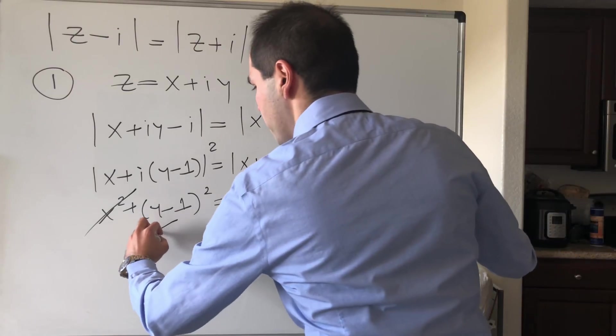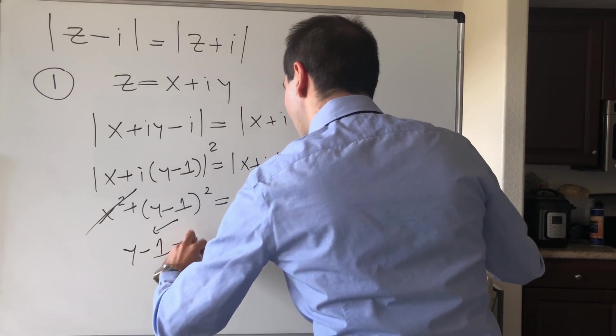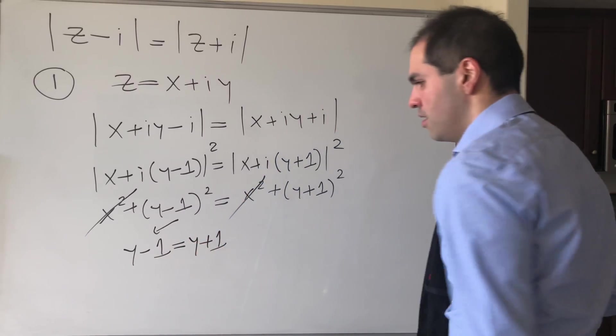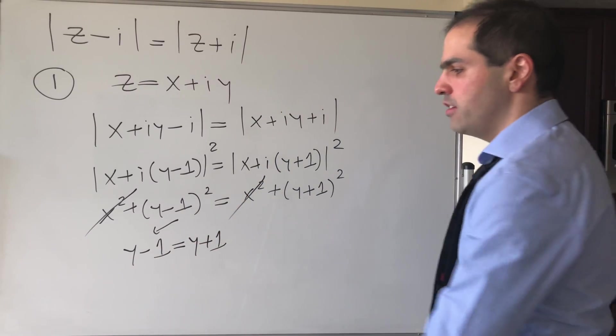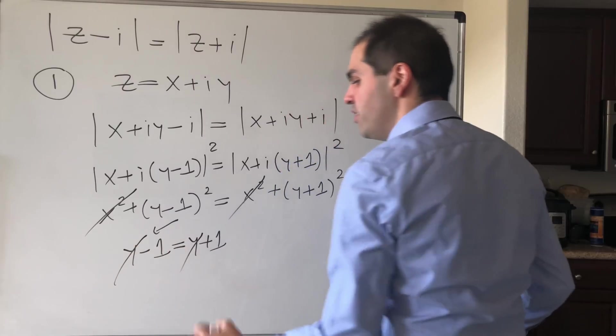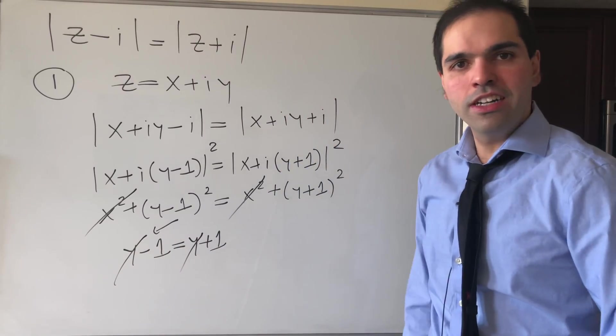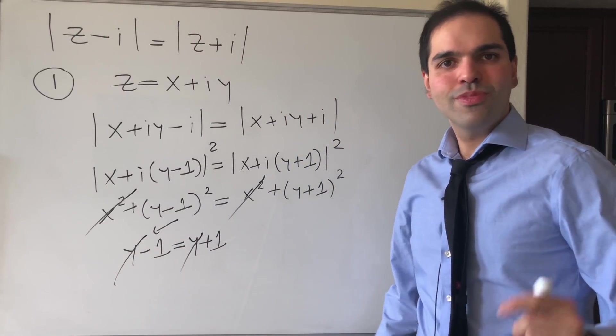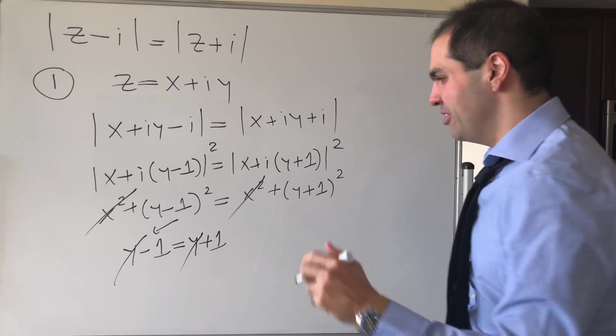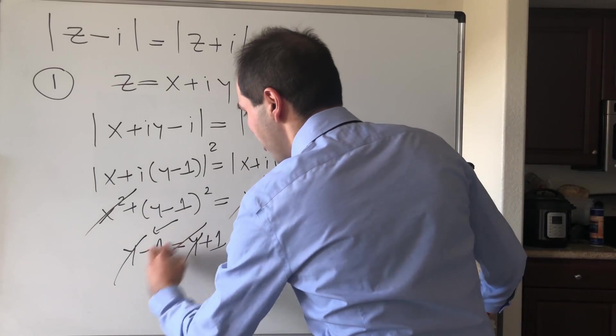This squared equals this squared, which gives us two possibilities. Either y minus 1 equals y plus 1. But the problem is, if you cancel this out, then you get minus 1 equals 1, which is incorrect. I know, laughs in z too, but here, let's keep it complex.